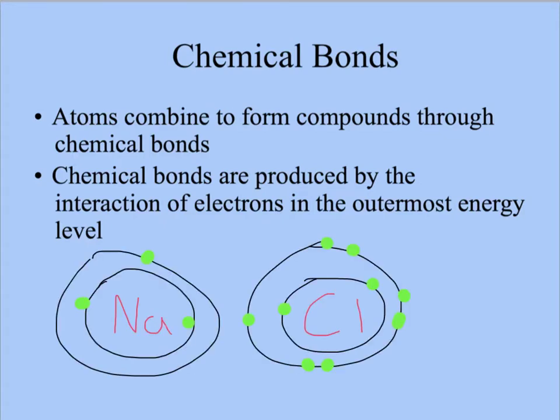For example, sodium, Na, has one electron in its outermost shell. Chlorine, for example, has seven electrons in the outermost shell. Chlorine really wants one more electron and sodium really wants to give away an electron. So sodium will give its electron to chlorine.